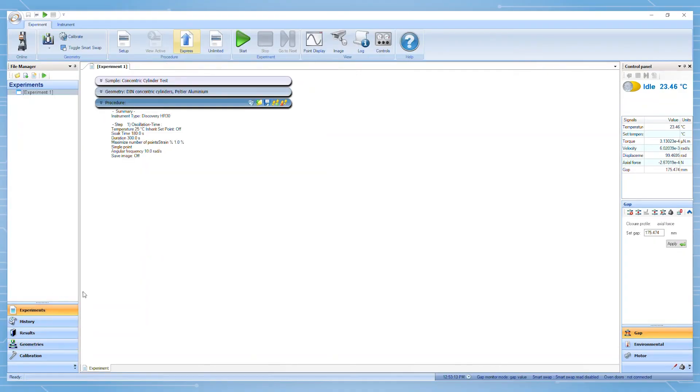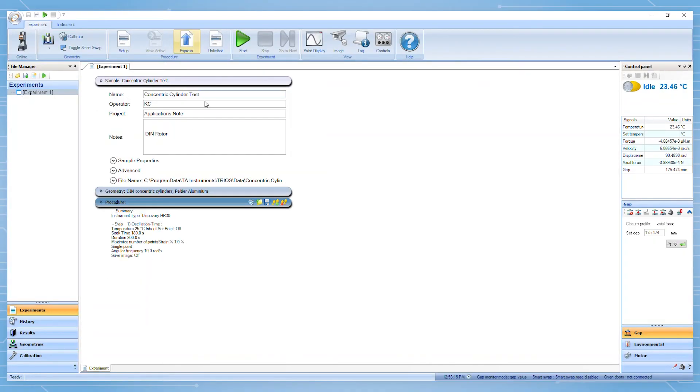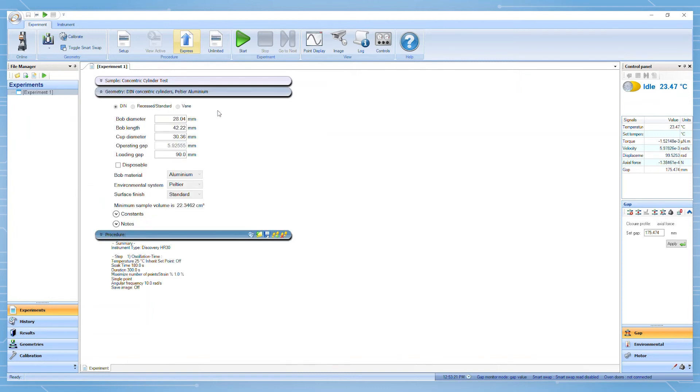When the operator has a desired experiment set up, the cup can be filled with the desired fluid. The minimum volume of fluid required for an experiment as well as the operating gap can be found in the geometry section of the experiments window.